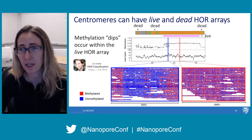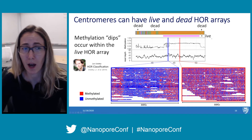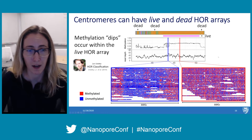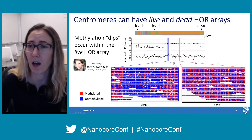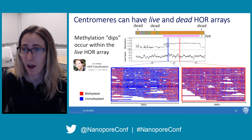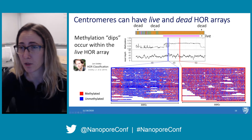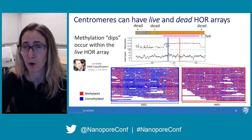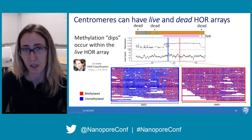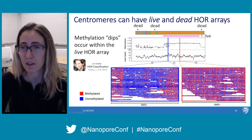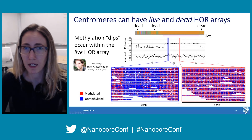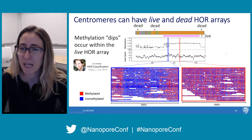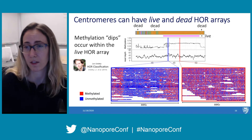Centromeres can have live and dead higher order repeat arrays, as classified by Lev Uralski. The live higher order repeat array is typically associated with CENPA and is the actual functional part of the centromere needed for proper chromosome segregation. Dead higher order repeats have more divergent monomeric units and are typically not associated with CENPA binding. We can see that this pattern of hypo- and hypermethylation is only within the live higher order repeat array and not within the dead arrays, leading us to believe this methylation pattern is potentially necessary for the centromeric region.